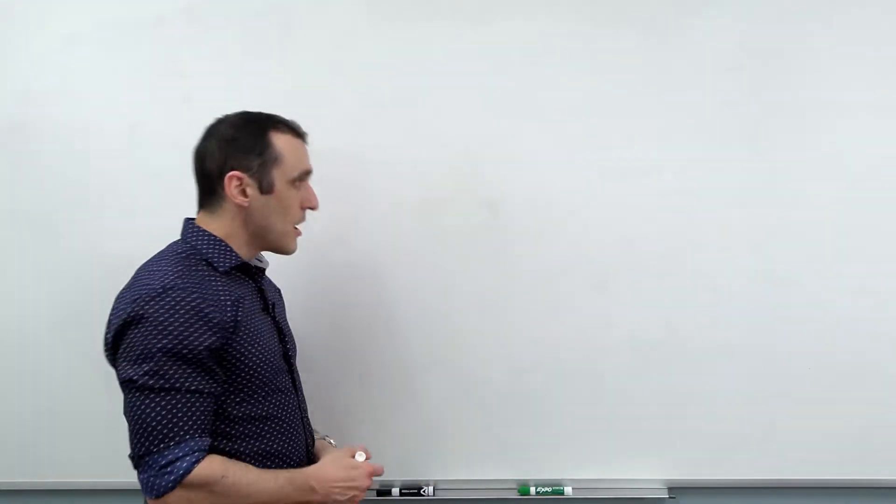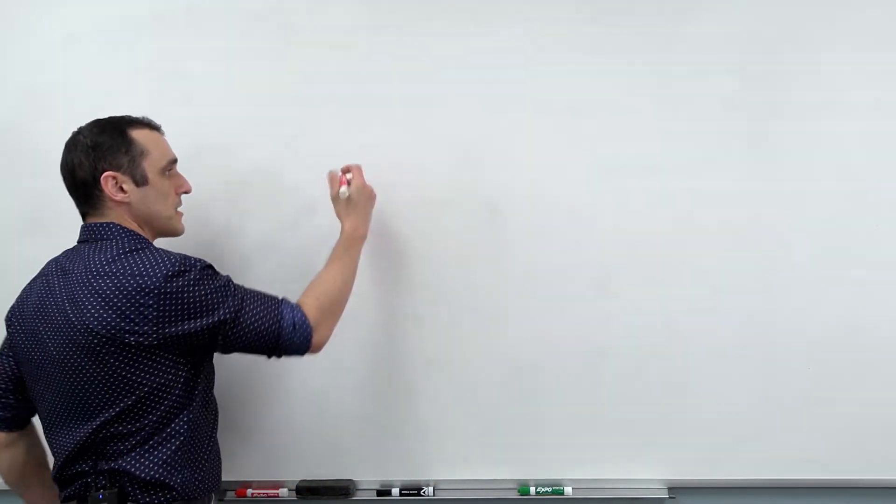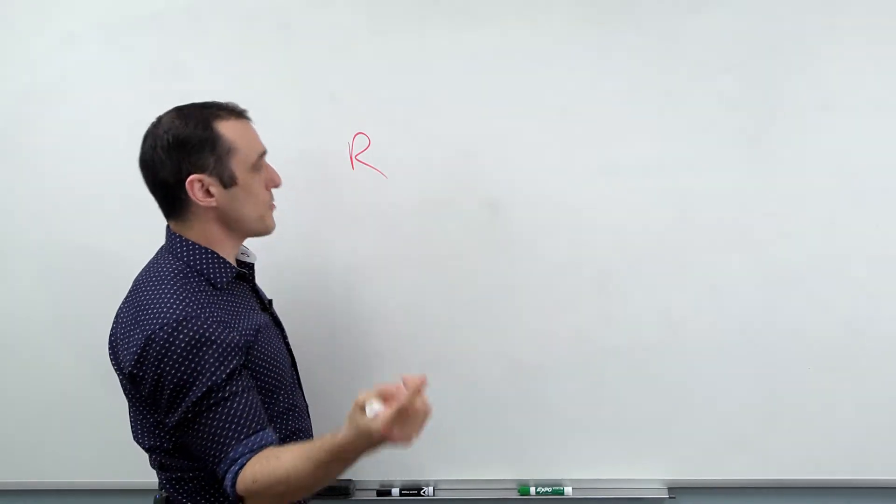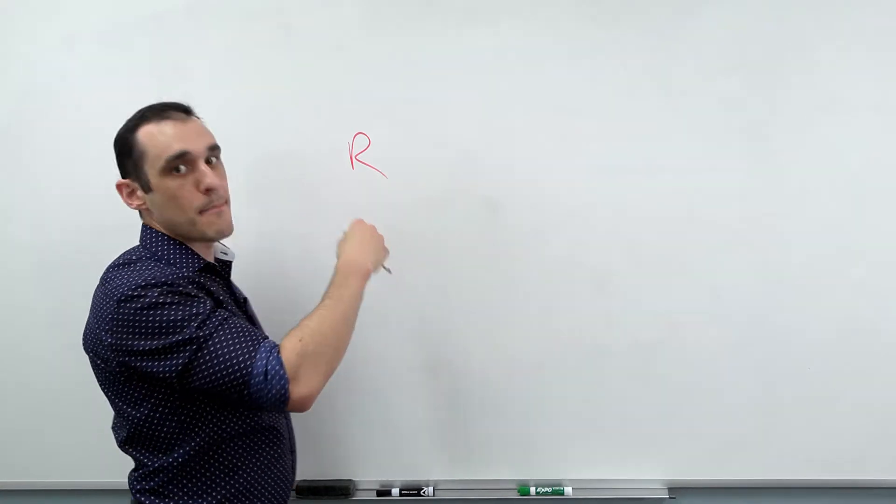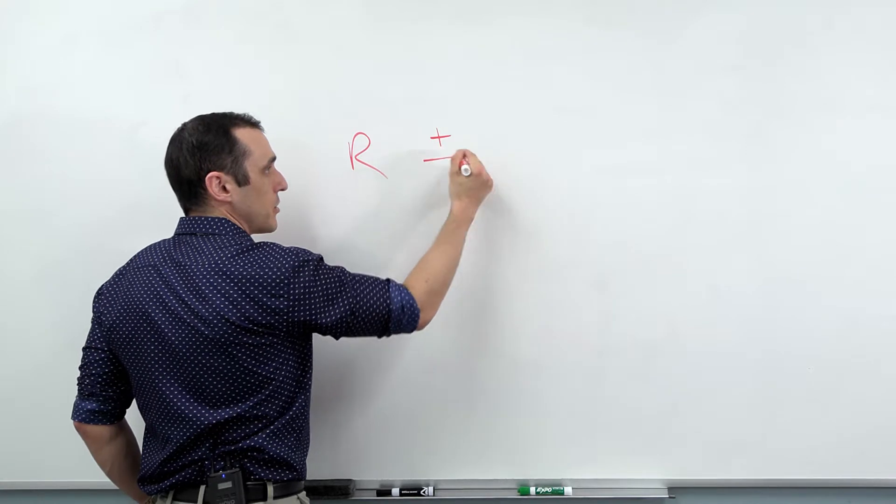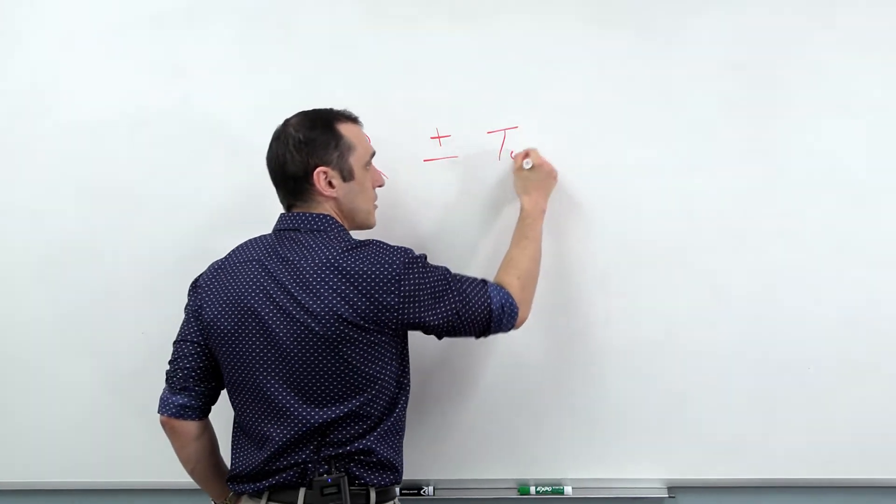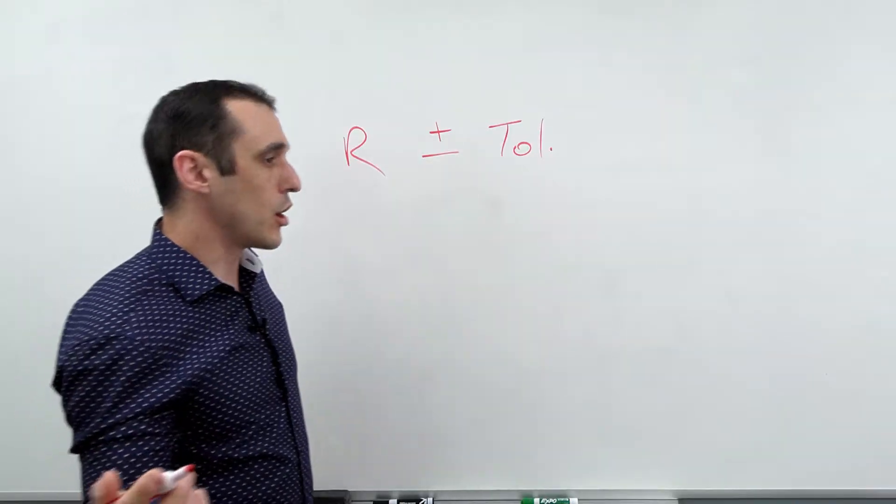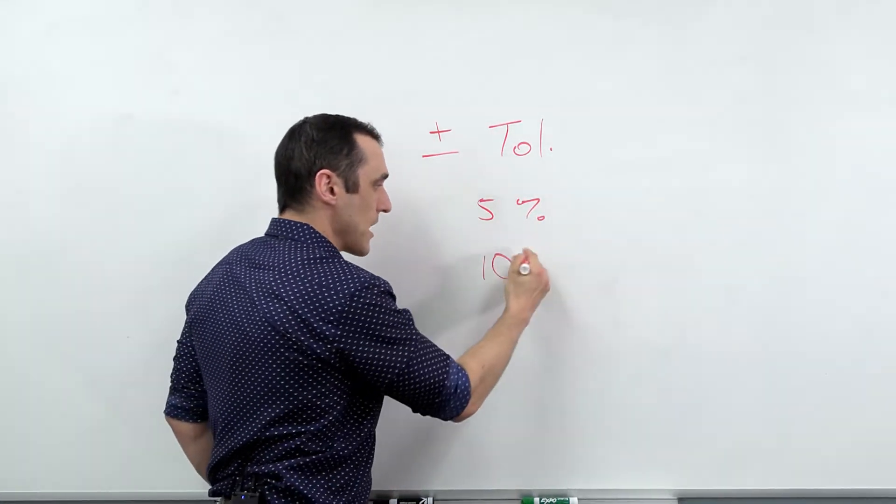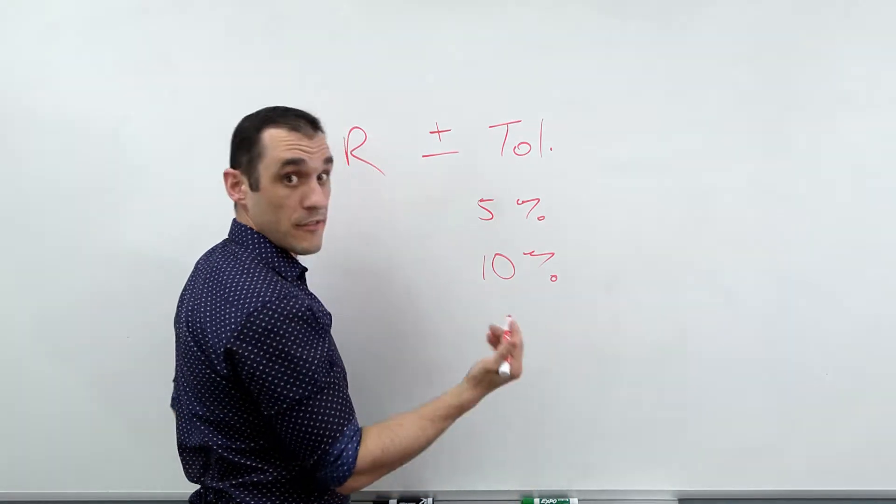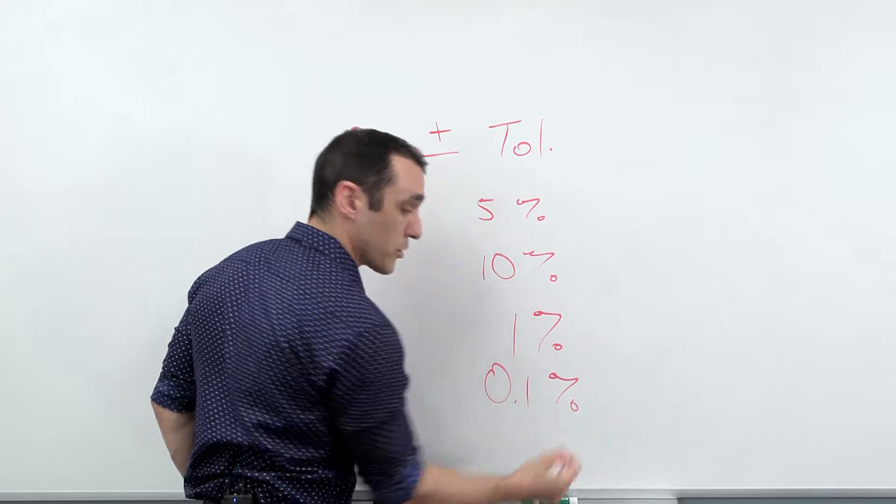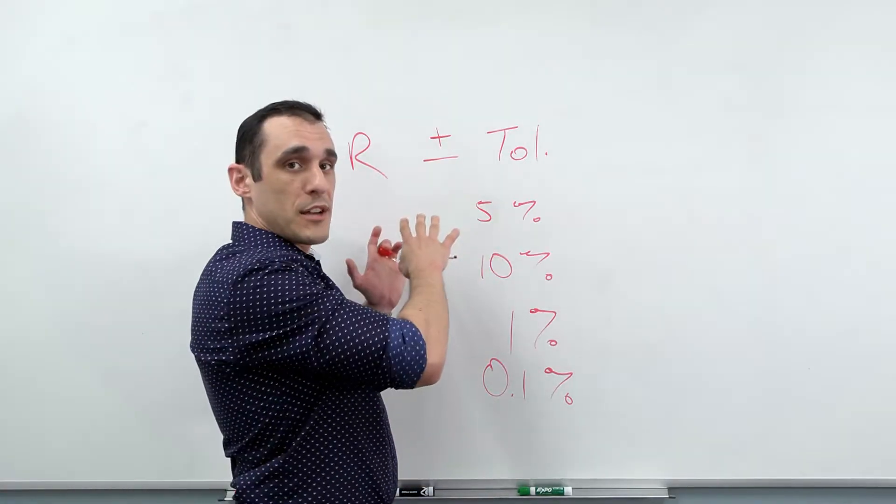So just as an example, if we have a resistor and let's say it has a resistance of R ohms, the real resistance, if you were to just pick up this resistor out of a bucket of resistors and measure it randomly, is not going to be exactly R, it's going to be plus or minus some tolerance value. And that tolerance value could be 5%, which is pretty common, could be 10%, or it could be a very precise resistor like 1% or even as low as 0.1%.